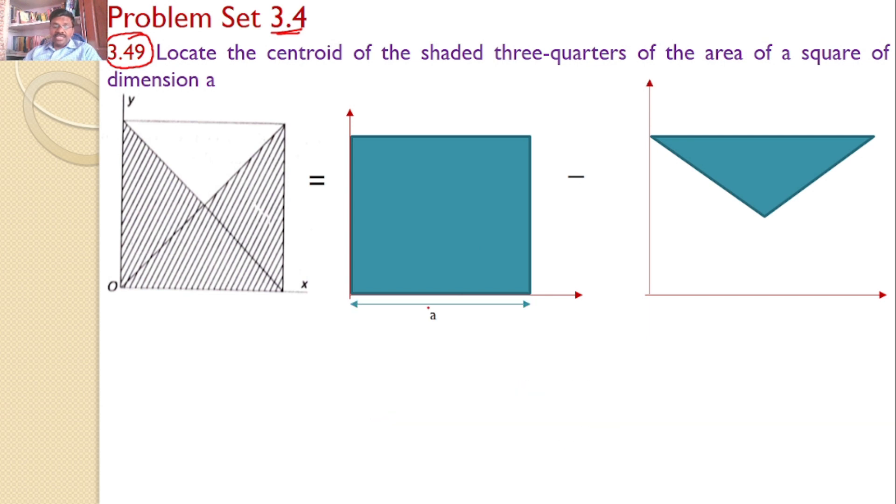What are the dimensions for area 1? a and a. So what are the dimensions for this area 2? This height is equal to a by 2, and this height is also equals to a by 2, but this is equal to a. So this is a by 2, this is a by 2, and this is a.